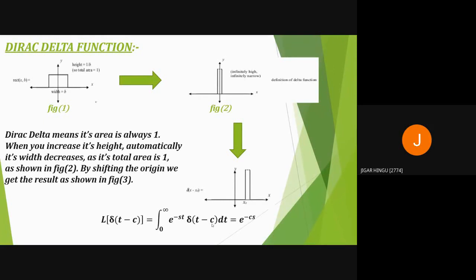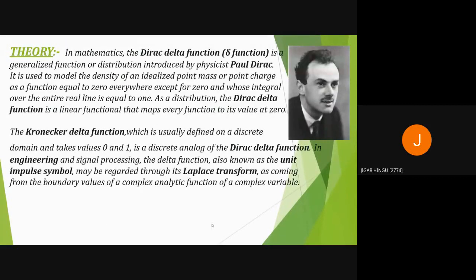The Dirac delta function always has an area of one. When you increase its height, its width automatically decreases, but the total area remains one. As shown in figure 2, by shifting the origin we get the result shown in figure 3. The Laplace transform of delta(t minus c) equals the limit as epsilon approaches zero of e raised to minus s times delta(t minus c), which equals e raised to minus cs. Theoretically, the Dirac delta function is a generalized function or distribution introduced by physicist Paul Dirac. It is used to model the density of an idealized point mass.